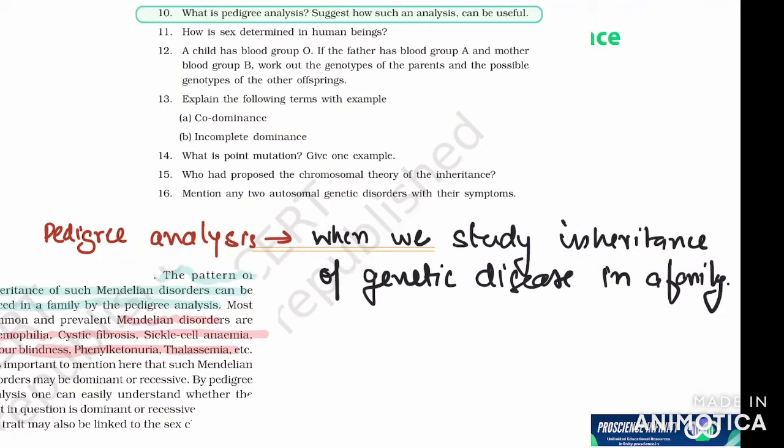If we study these diseases in a family, then this analysis is called pedigree analysis. We use some symbols: square is for male, circle is for female, the line between the two represents mating, and their children are depicted by forming different lines below.